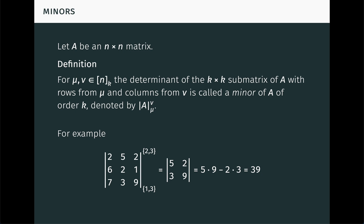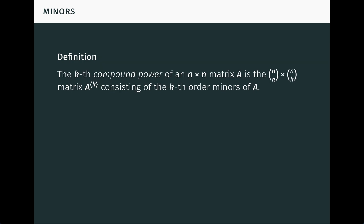We've studied minors in prior videos, but in this video we go deeper. We start by collecting the minors into a matrix. The kth compound power of an n by n matrix A is the (n choose k) by (n choose k) matrix A^⟨k⟩, consisting of the kth order minors of A.